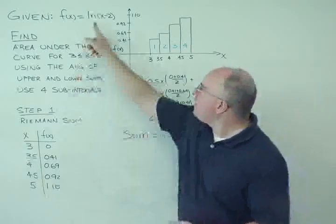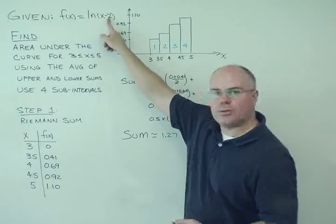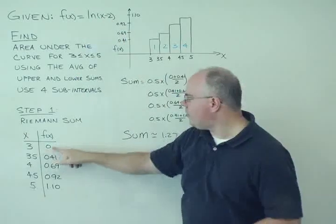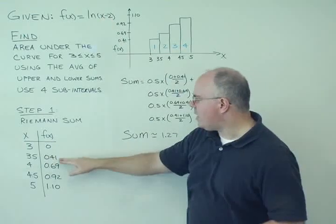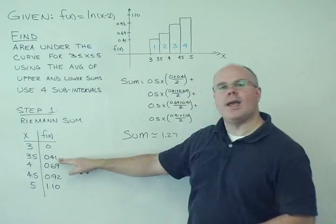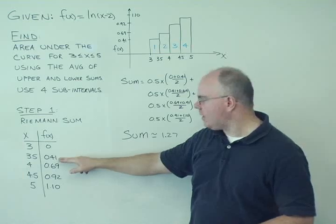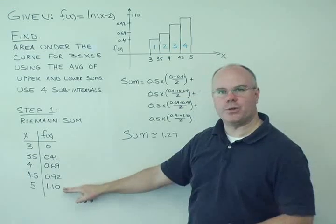And we're going to go ahead using our calculator to find these numbers. So we'll punch in ln(3) minus 2, which is 1. ln(1) is 0. ln(3.5) minus 2 turns out to be 0.41, and the rest of the numbers we can use our calculator to determine. Those numbers are right here.